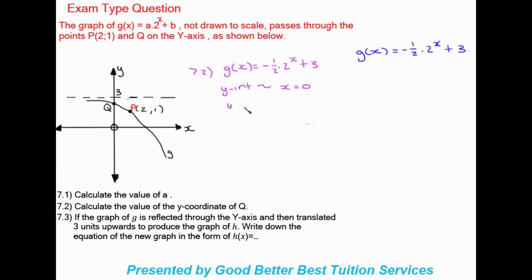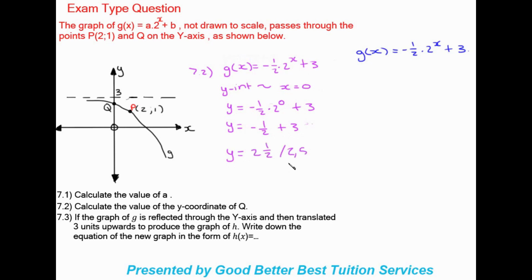Setting x equals 0: y equals minus one half times 2 to the power of 0, plus 3. Anything to the power of 0 equals 1, so we get minus one half times 1, which is minus one half, plus 3. Therefore y equals 2 and a half, or 2.5. Either answer is acceptable. The y-coordinate of Q is 2.5.